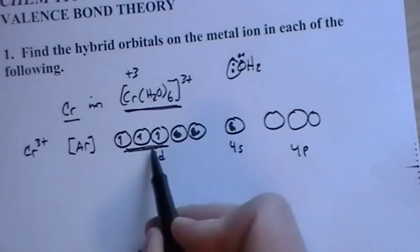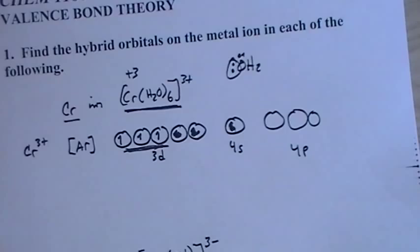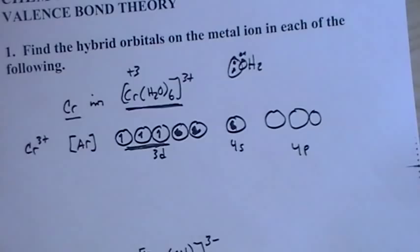Now, these ones I've scratched out, those are empty, so we can't touch these. Even though they're half-filled, and that's what we were looking for back in Chapter 10, now we need completely empty orbitals to allow the two electrons from the ligand to attach.